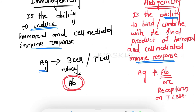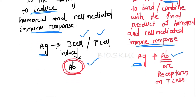The antigen induces the B cell or T cell — humoral and cell-mediated immunity — to generate the antibody. But in antigenicity, the antigen is not generating an immune response; it directly binds to the final product of immune response, which is the antibody.